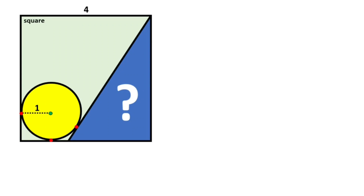Hello everyone. In this video we have one circle and one square. The radius of the circle is given as one unit and the side length of the square is given as four units. These are given as tangent points. Here is the center point and the area of this triangle is asked.